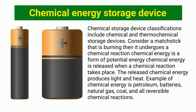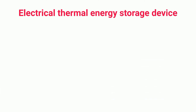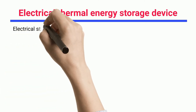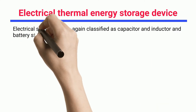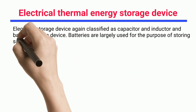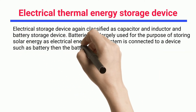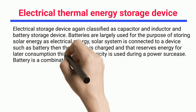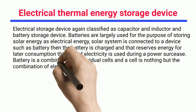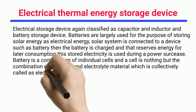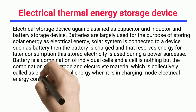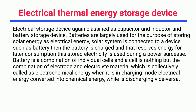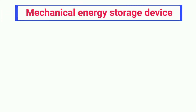Electrical thermal energy storage devices are classified as capacitor, inductor, and battery storage devices. Batteries are widely used for storing solar energy as electrical energy. When a solar system is connected to a battery, the battery charges and reserves energy for later consumption — used during a power outage. A battery is a combination of individual cells, each being a combination of electrode and electrolyte material, called electrochemical energy. During charging, electrical energy converts to chemical energy; during discharging, the reverse occurs.